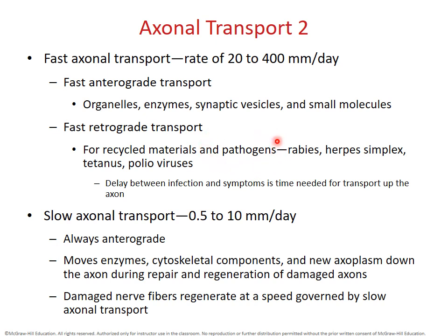Unfortunately, certain types of pathogens can take advantage of these transport mechanisms and hitch a ride on the dynein and kinesin. This is how certain kinds of viruses can migrate through our nerves into our central nervous system. They take the fast retrograde transport train and can migrate from where the breakout might be — say, at the surface of the skin in the case of herpes — and migrate along axons in nerves, then take up residence in the central nervous system in the cell bodies.